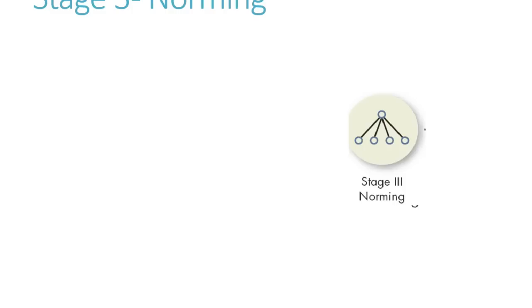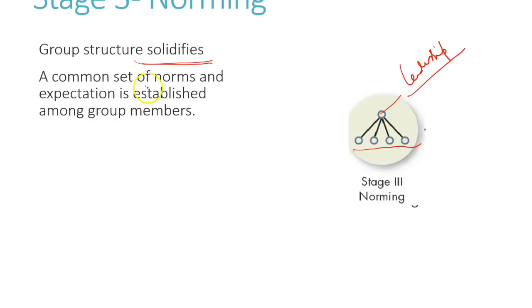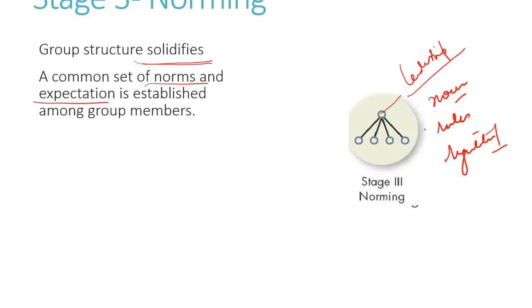The third stage is the norming stage. Now in this stage, a leader has been defined. Looking at the diagram, the leader is already there and everybody has started following. The group structure has solidified — the four remaining people have, by voting or some other means, chosen a leader. Additionally, norms and expectations have been established: how the group will work, what the rules and regulations are, who will do what task. Everything has now been decided.